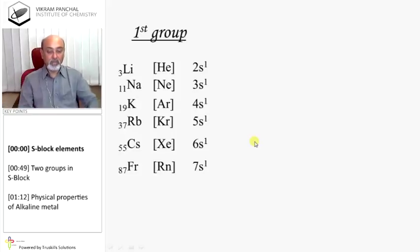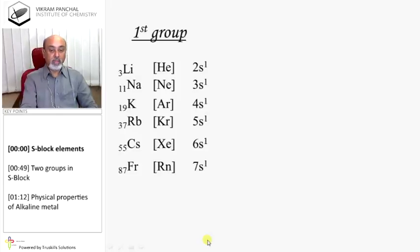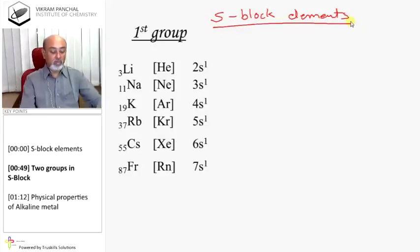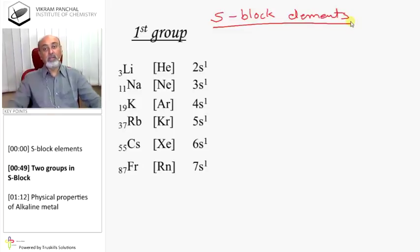These elements are known as S-block elements. There are two groups in S-block. First group is alkali metal, second group is alkaline earth metal.